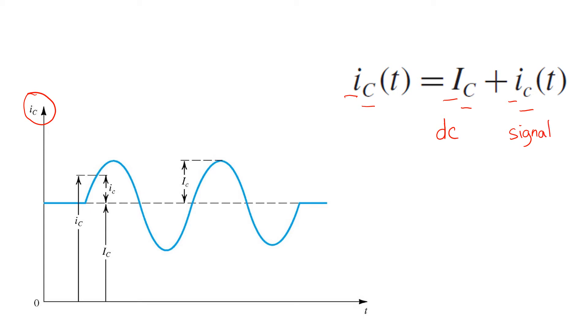We may also refer to the DC component of a signal as a bias or a DC bias. That's because the signal as a whole is sort of biased around this level, IC. Even when it's not carrying information, it just sits at IC.